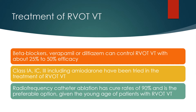Beta blockers, verapamil, or diltiazem can control RVOT VT with about 25 to 50% efficacy. Class 1A, 1C, and Class 3 drugs including amiodarone have also been tried in the treatment of RVOT VT. Radiofrequency catheter ablation has cure rates of 90% and is the preferable option given the young age of patients with RVOT VT.